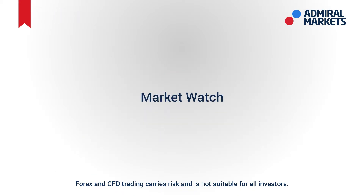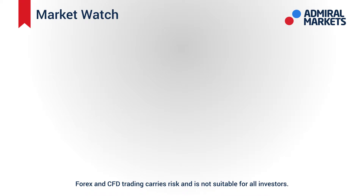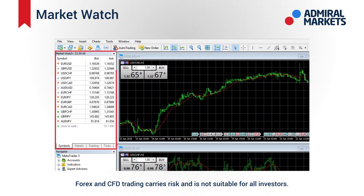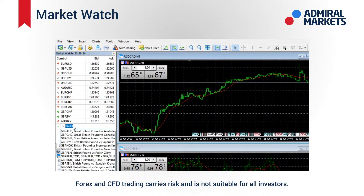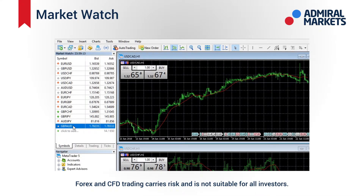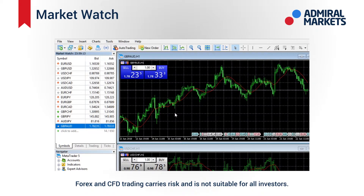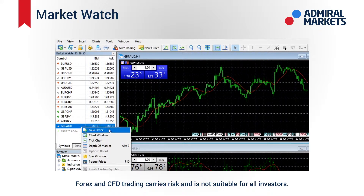On the left of the platform is the market watch. At the bottom you'll see some tabs like symbols, details, trading and ticks. There are a few important things that you can do here. One, you can click to add a currency pair of your choice. Two, select any pair and simply drag and drop in the chart area. Three, right click on market watch and place a new order directly.